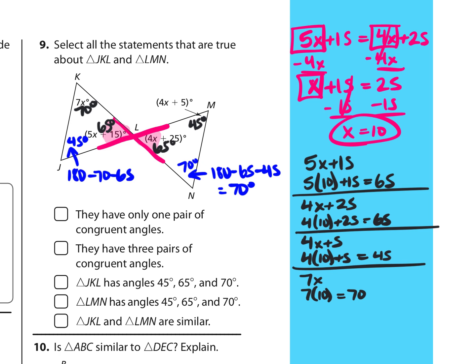So that first choice is not correct because all of the angles correspond. They have three pairs of congruent angles. That is true. Triangle JKL has angles 45, 65, and 70. That's true. Triangle LMN has angles 45, 65, and 70. That is true. And since all the angles are the same, they have to be similar triangles. That is true.